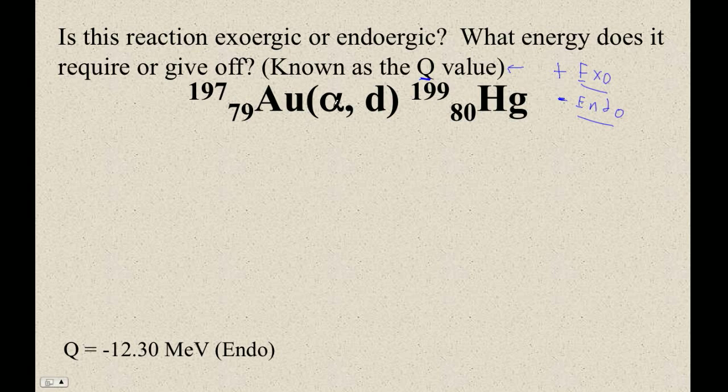This is gold getting hit by an alpha particle, giving off deuterium and being transmuted into mercury.